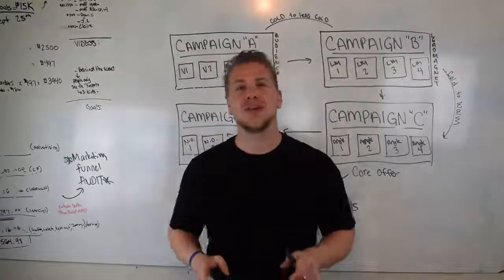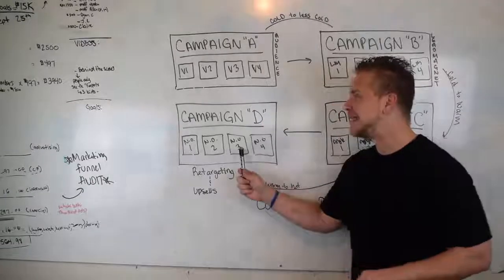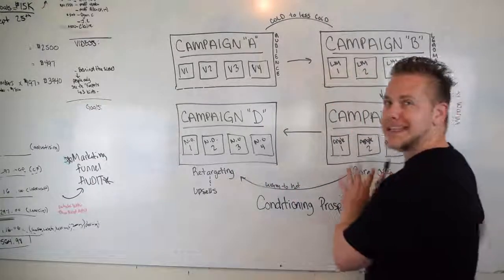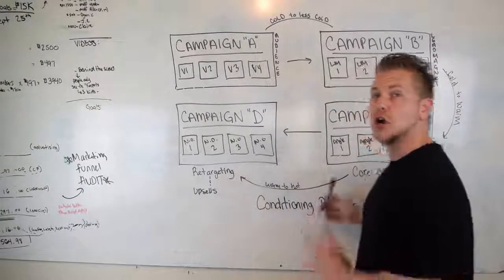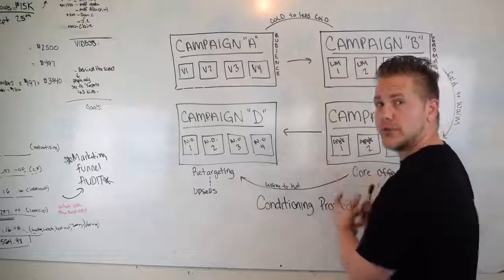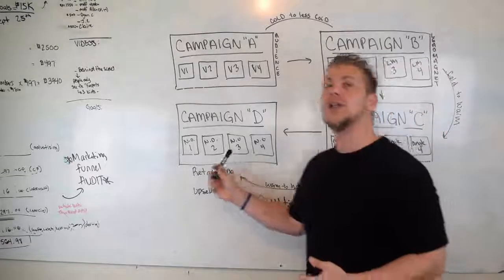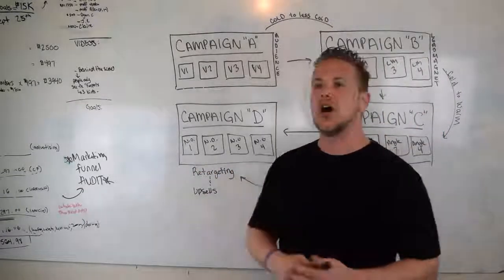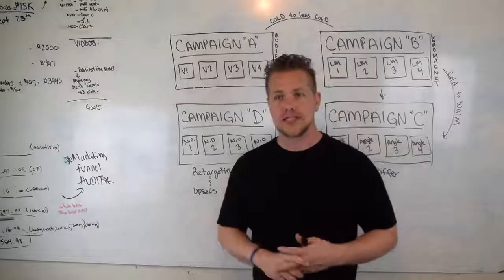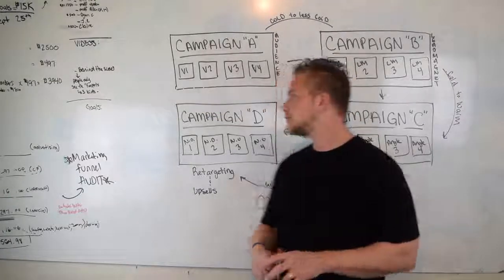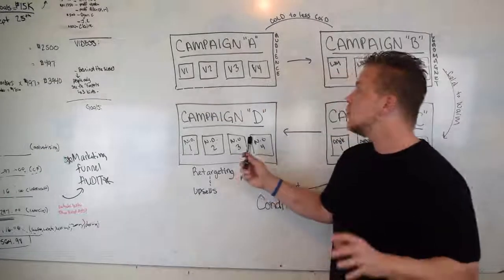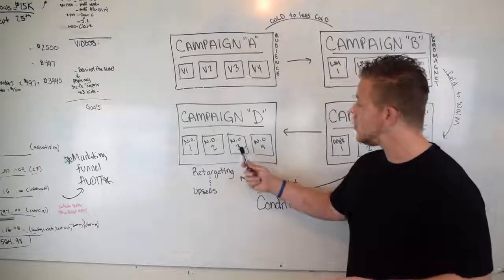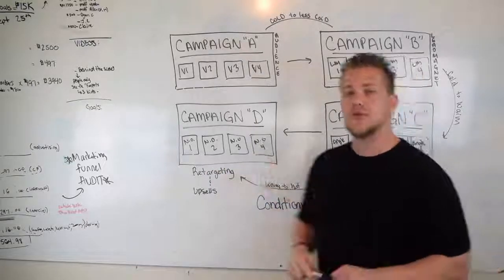Then we move into Campaign D. Moving from Campaign C to D, these are really warm leads becoming really hot — these are buyers. This campaign is for retargeting people with upsells and new offers. So you want to have new offer one, new offer two, new offer three, and new offer four.